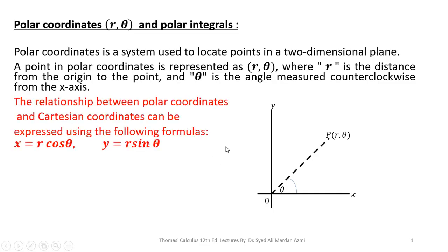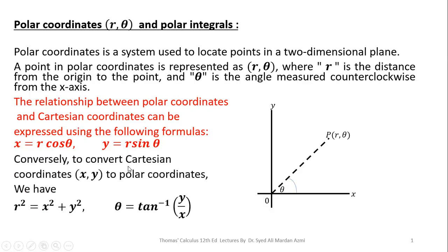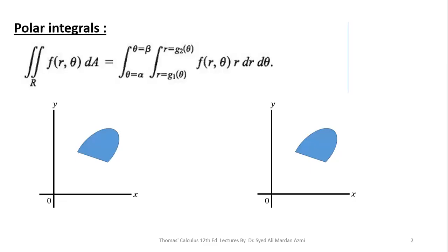Next, we have the transformation equations: x is equal to r cos theta and y is equal to r sin theta. These transformation equations are used to convert Cartesian coordinates into polar coordinates. For the reverse process, we have r squared is equal to x squared plus y squared, and theta is equal to inverse tangent of y over x.